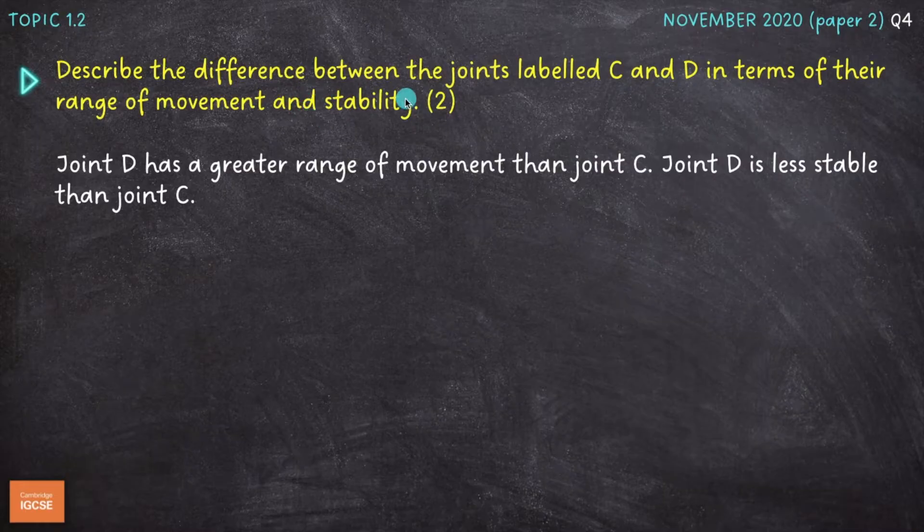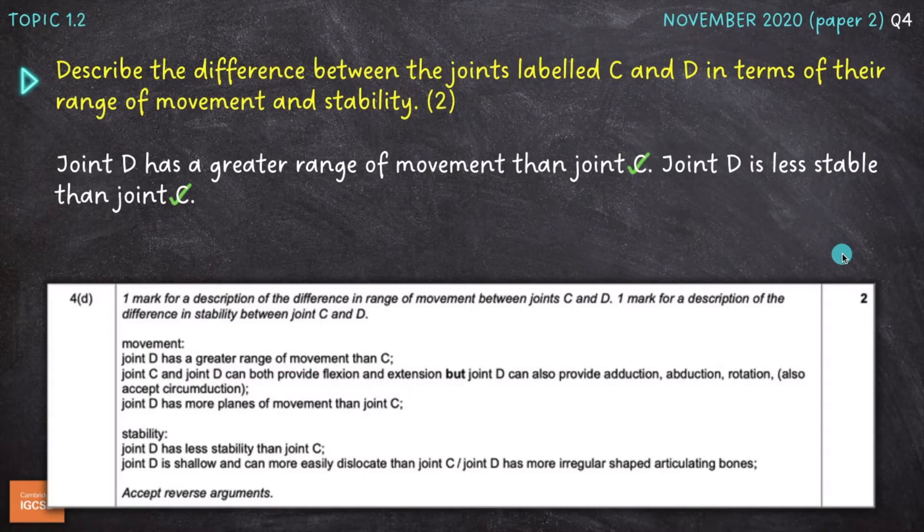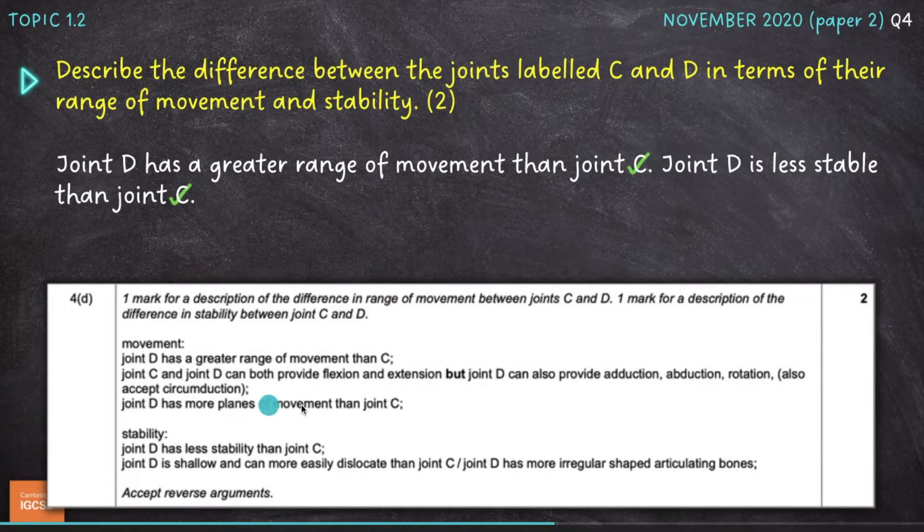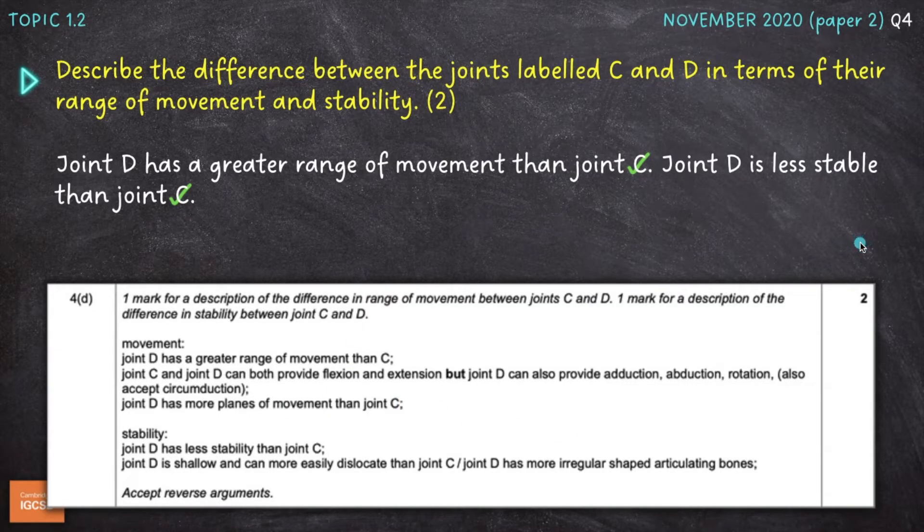So there's my first difference between those joints. And the second one, talking about stability now, joint D is less stable than joint C. So ball and socket joints are less stable than hinge joints. So you can have a look through this mark scheme. I've covered the most obvious points here already, but there are a couple of other things or differently worded responses that you could have gone for. So take your time to have a look through that if you had a go at this question yourself.